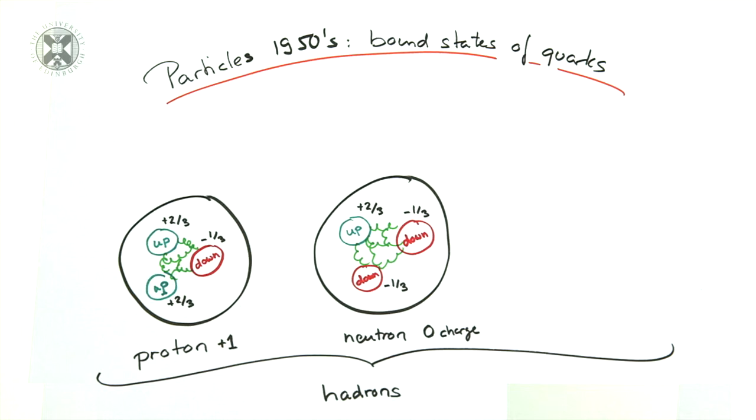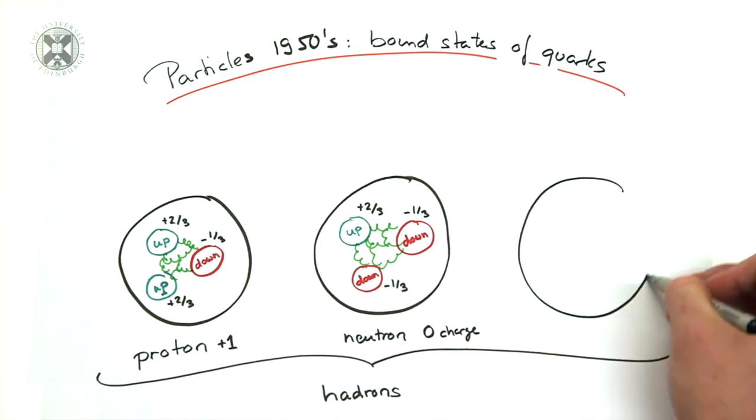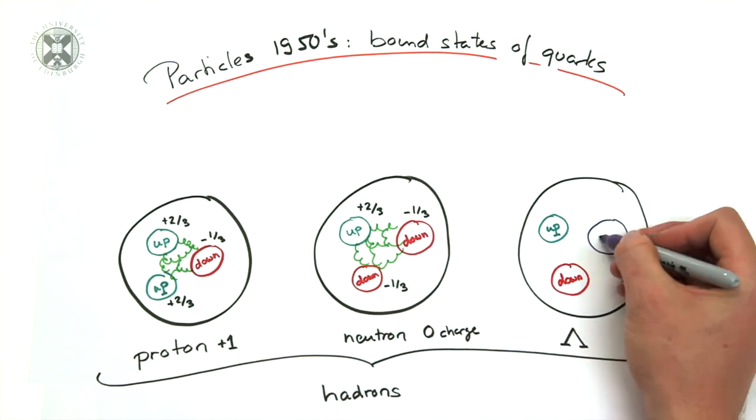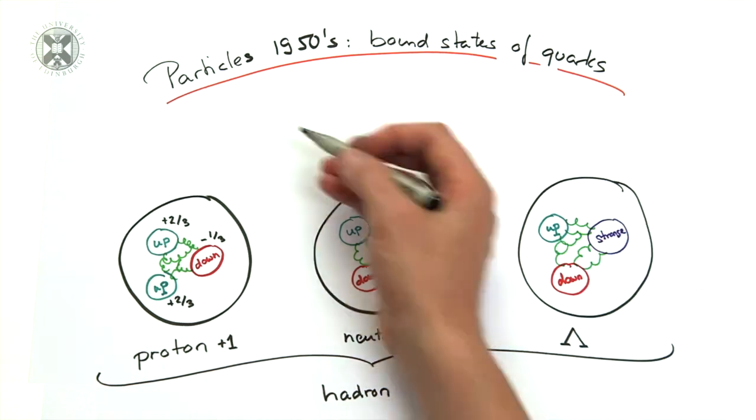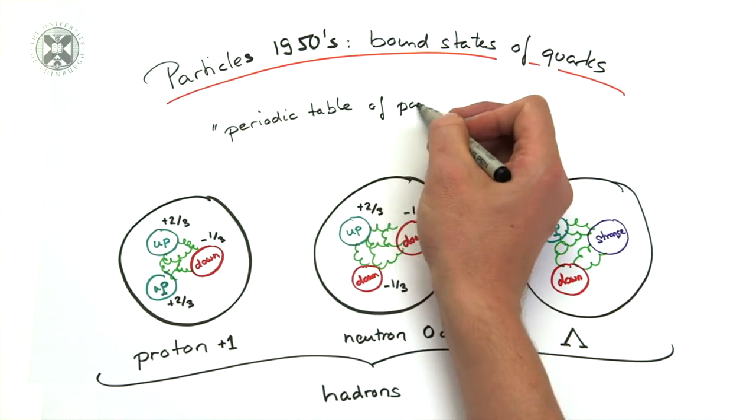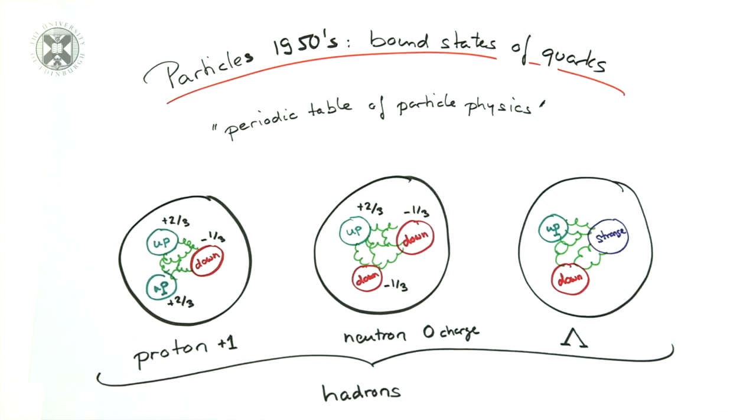The large range of particles discovered by the physicists in the 1950s can therefore be understood as variations thereof, interchanging the light flavors of up, down, and strange quarks. For example, the bound state made out of up, down, and strange is known as the lambda and weighs approximately 1.2 times the proton mass.